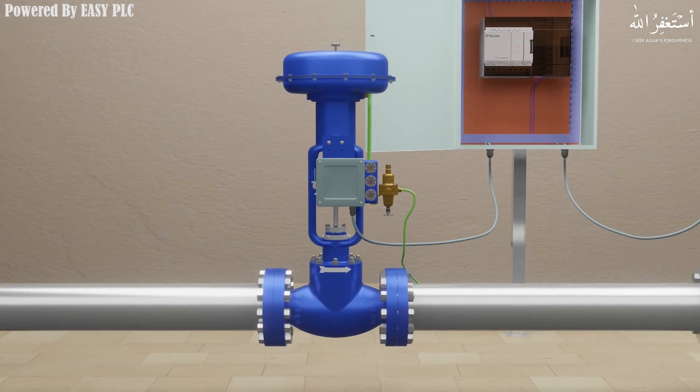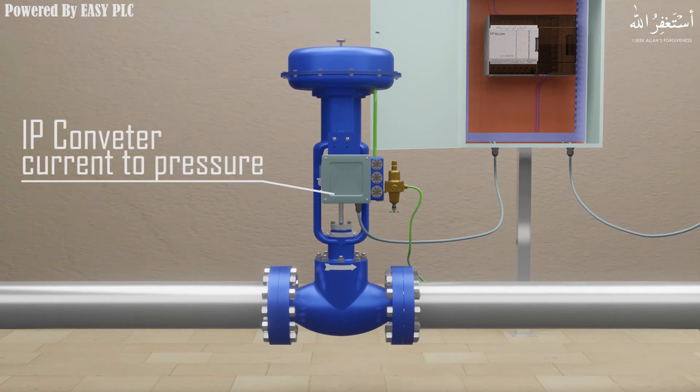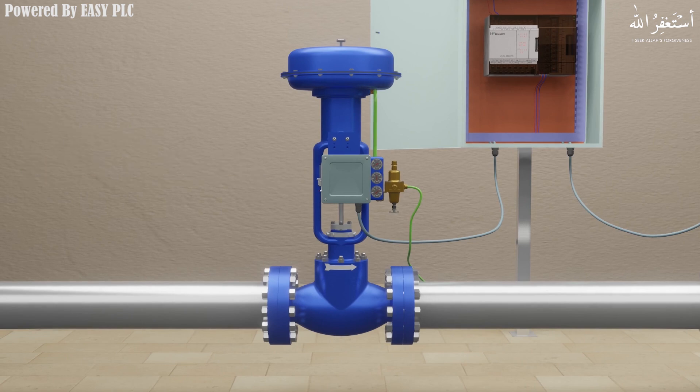Because the PLC signal is electrical, most common signal type is 4 to 20 milliampere, the control valve may require a device to convert that electrical signal into a pneumatic force so that it can operate. An IP converter, which is a current to pressure converter, will convert electrical signal into pneumatic force.